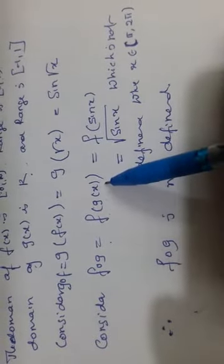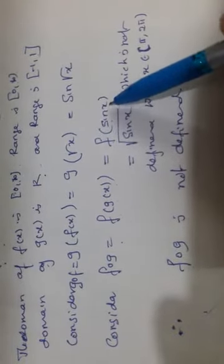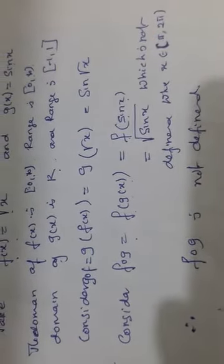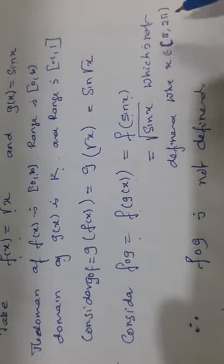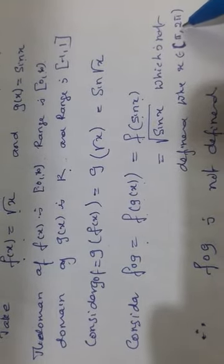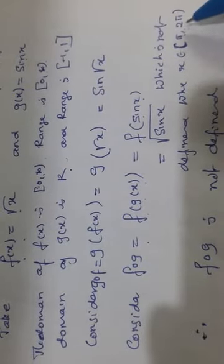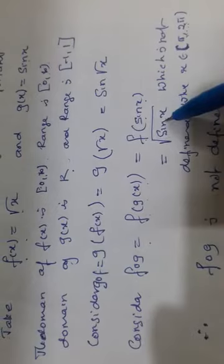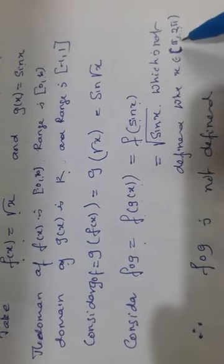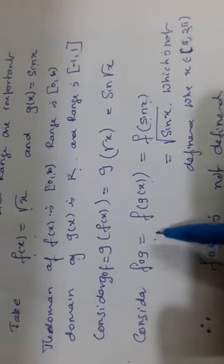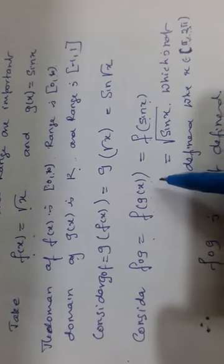Consider f composite g: that equals f of g of x. Since g of x equals sin x, f of sin x equals root of sin x, which is not defined for all real numbers x. When x is between pi and 2 pi, that is in the third and fourth quadrants, trigonometric functions take negative values, and the square root of a negative number is not a real number. Therefore, for elements in the interval pi to 2 pi there is no image, so f composite g does not form a function from R to R.